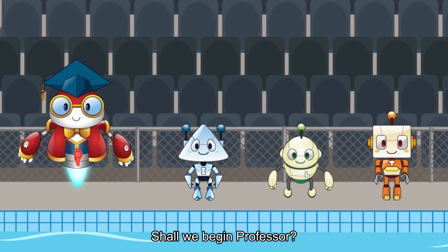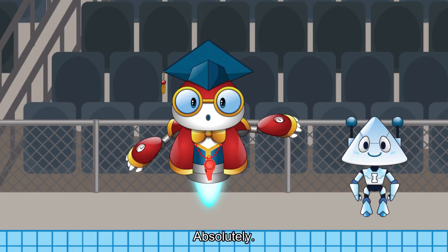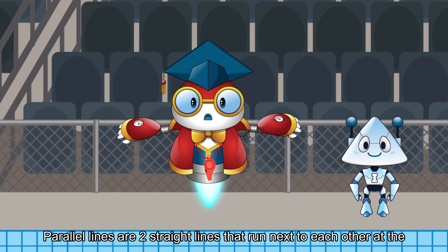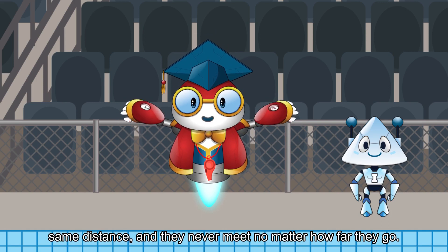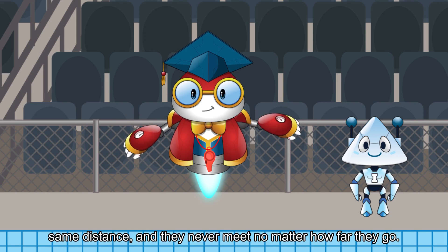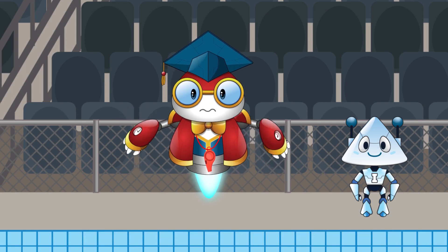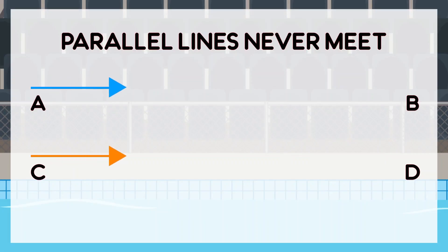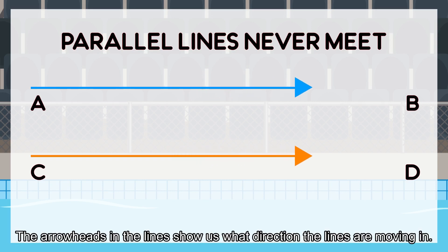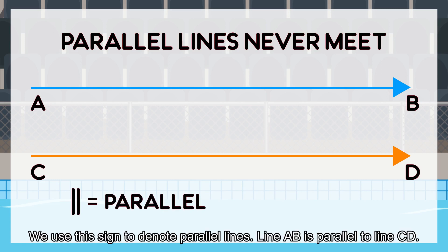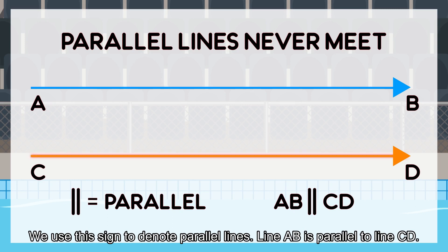Shall we begin, Professor? Absolutely! Parallel lines are two straight lines that run next to each other at the same distance, and they never meet, no matter how far they go. Like this. The arrowheads on the lines show us what direction the lines are moving in. We use this sign to denote parallel lines. Line AB is parallel to line CD.